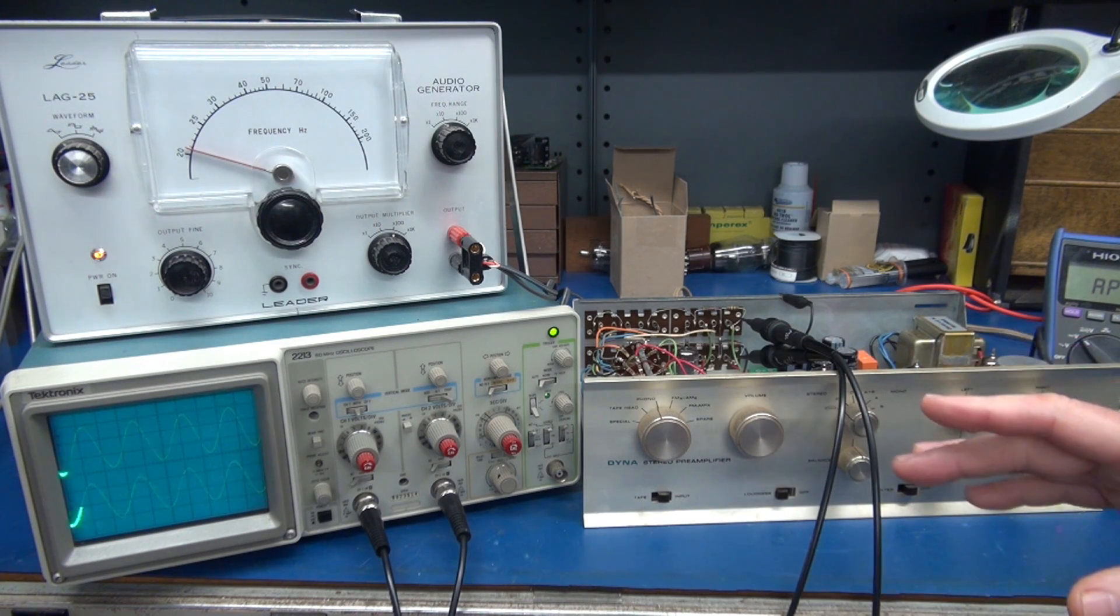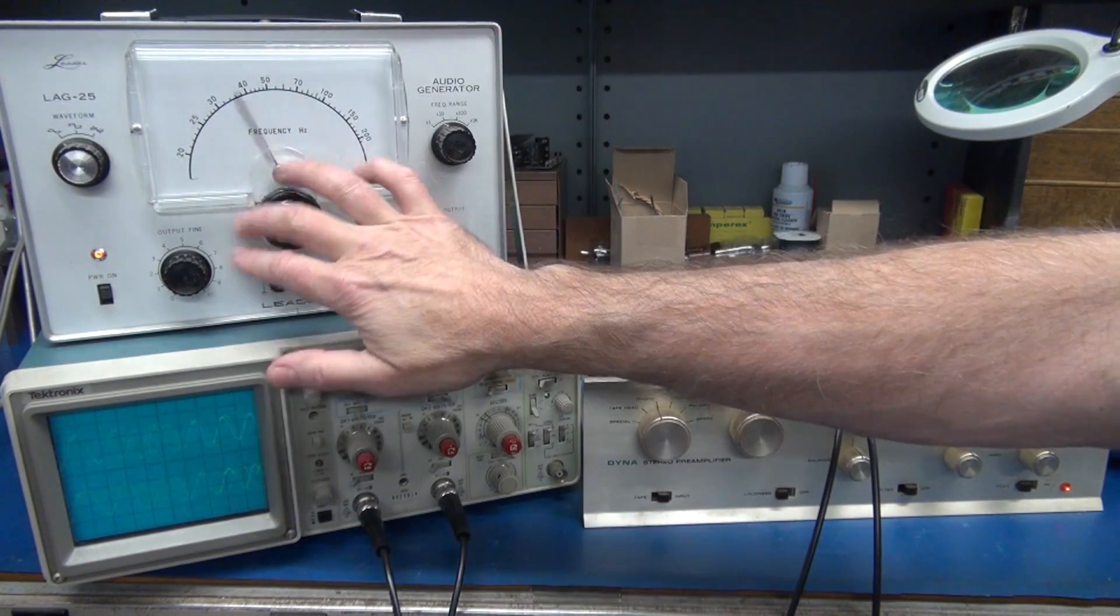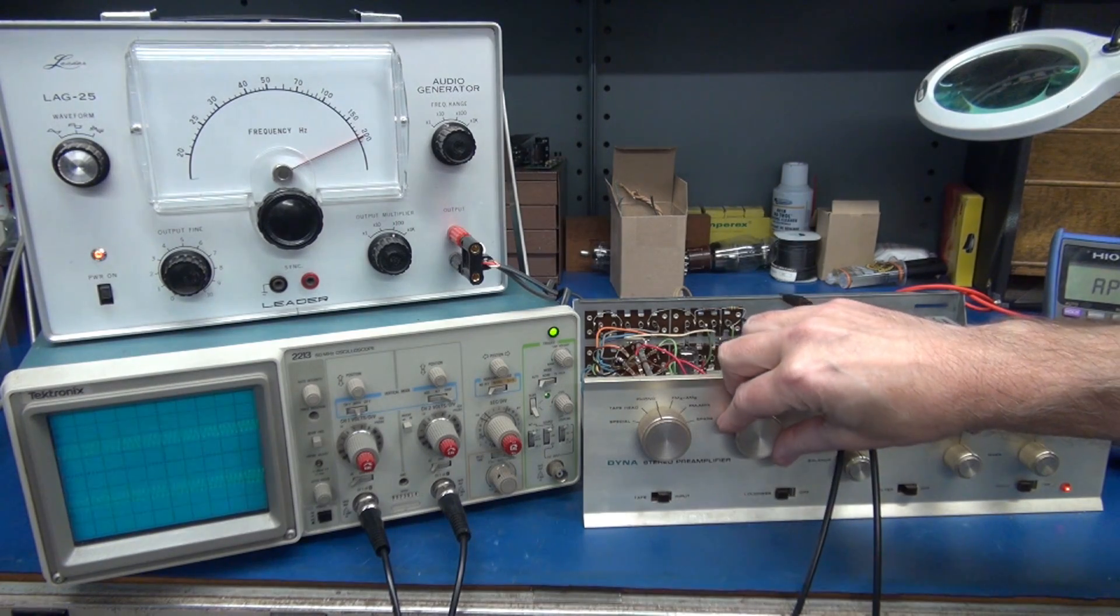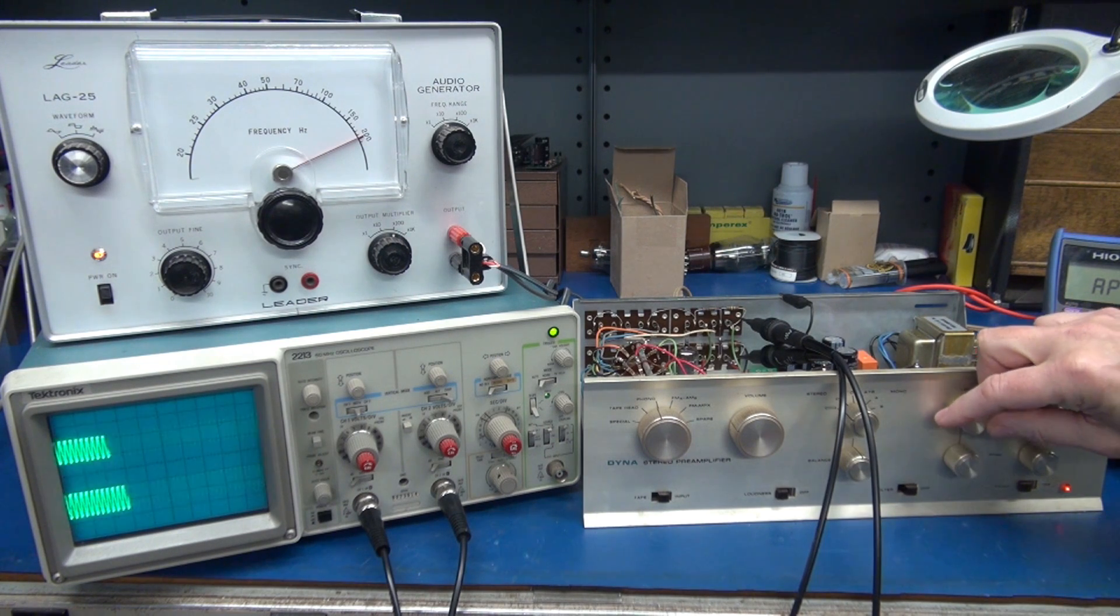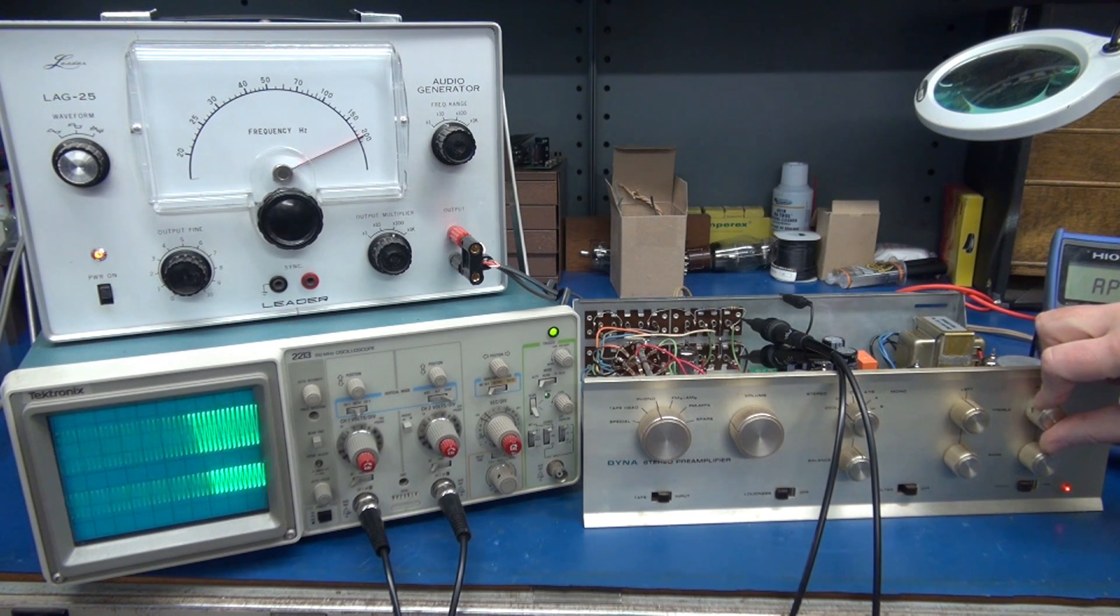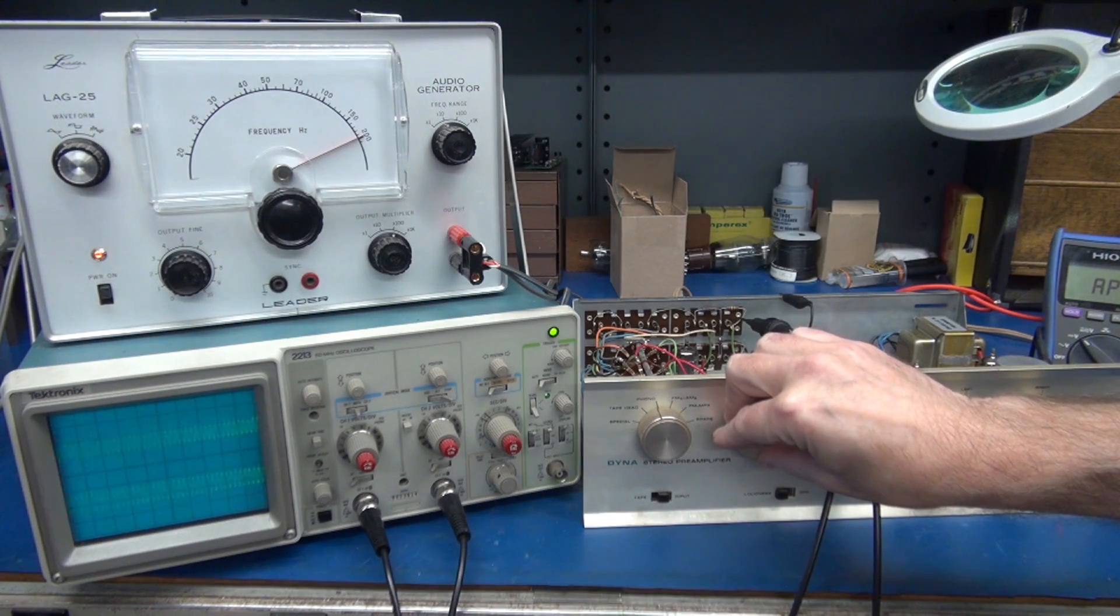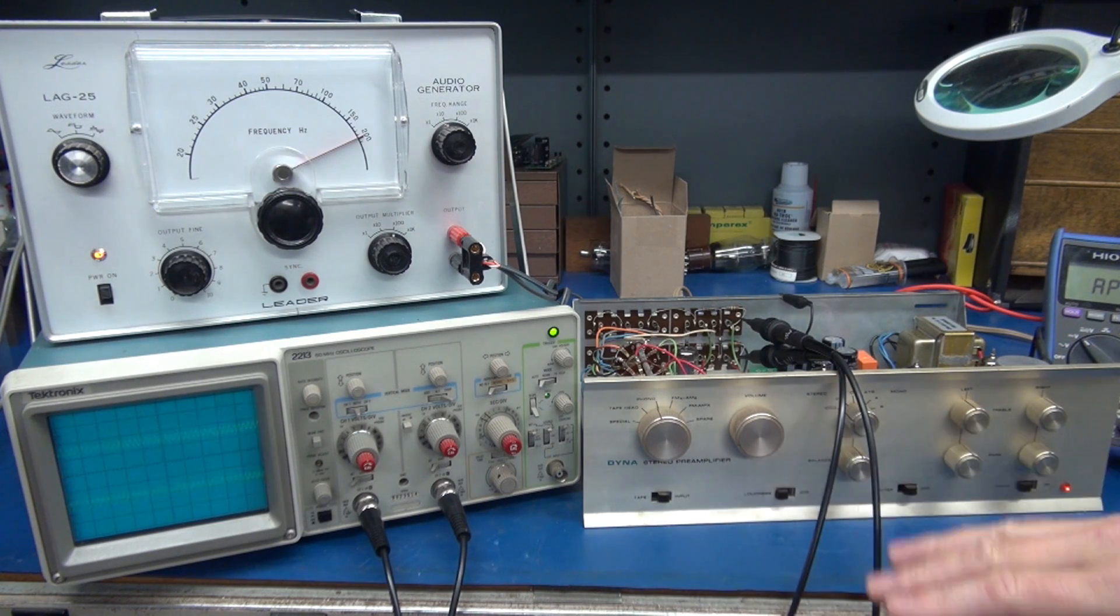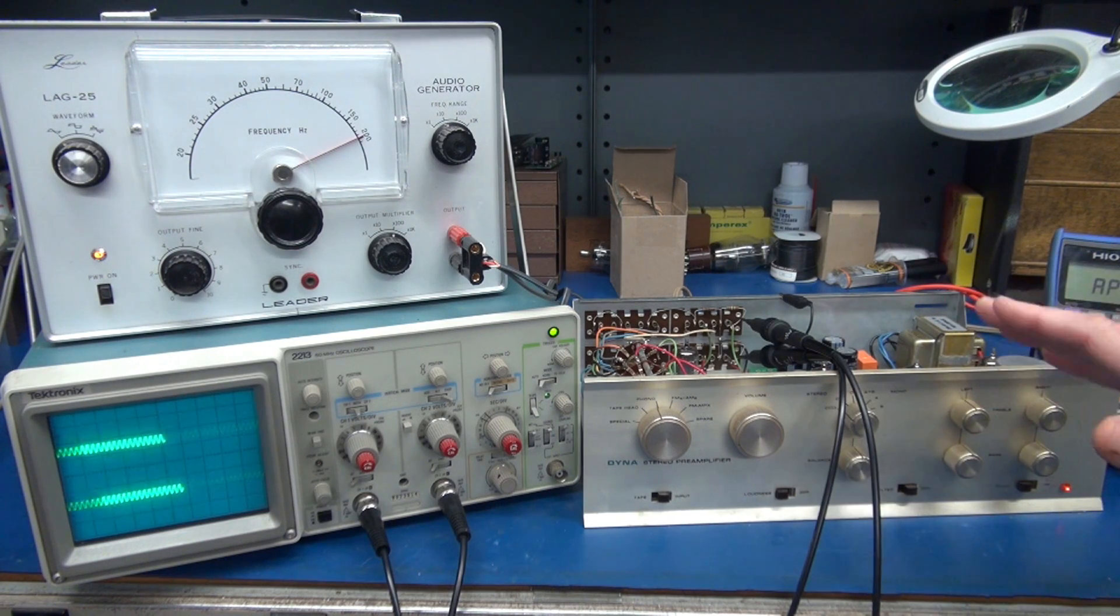Make sure that they increase and decrease and set back to mid position. Now we're going to set the audio generator for 2 kilohertz, which on the liter is way over here. Now we're going to vary the treble controls and verify that they operate. This verifies that the phono input board is operating. It only requires approximately 10 to 20 millivolts, whereas the high end inputs will be up around 100 to 200 millivolts.